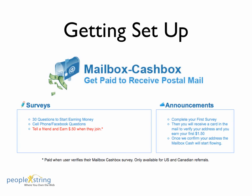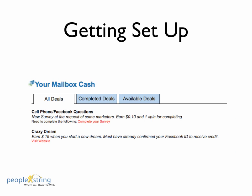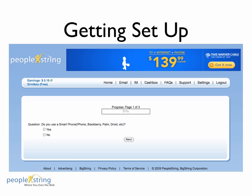At the top of the page it says Mailbox Cash Box — get paid to receive postal mail. Scroll all the way to the bottom where it says 'Complete Your Survey' and click on that link. That link will take you to another page with the survey, which takes roughly about five to ten minutes to fill out.